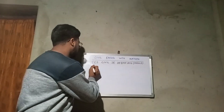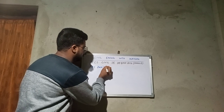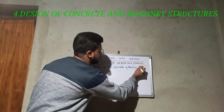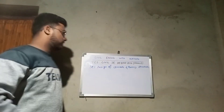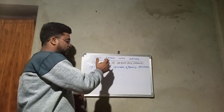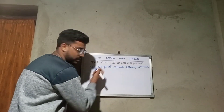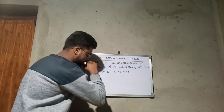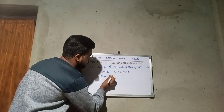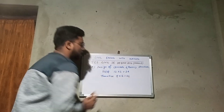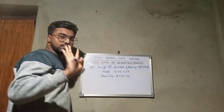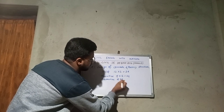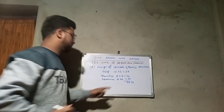The next subject is Design of Concrete and Masonry Structures — a very important subject, that is RCC. Let's see how RCC appears in 2016. MCQ is 12 into 2, total 24 marks. Theoretical question is 4 into 6, that is 24 marks. Numerical question is 4 into 6, that is 24 marks. So the total marks for RCC is 72 marks.